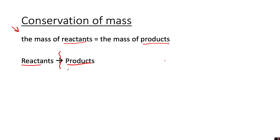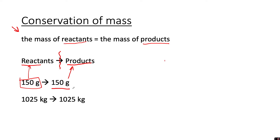If you put 150 grams of reactants in, you are going to make exactly 150 grams of products. Even at a bigger scale, if you had 1025 kilograms of reactants going into your chemical reaction, you are going to make exactly 1025 kilograms of product, because during a chemical reaction no atoms are created or destroyed — they just swap places.